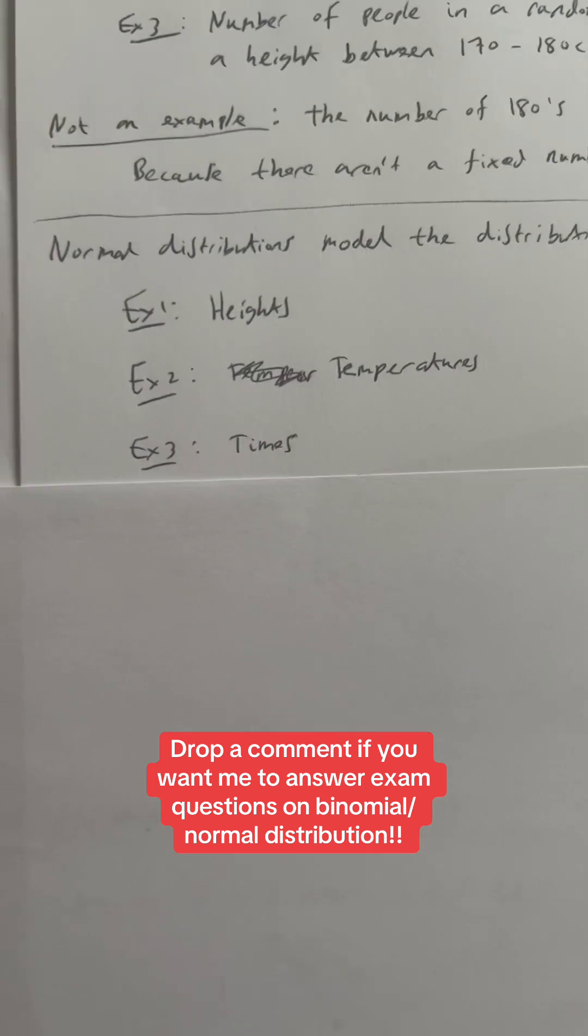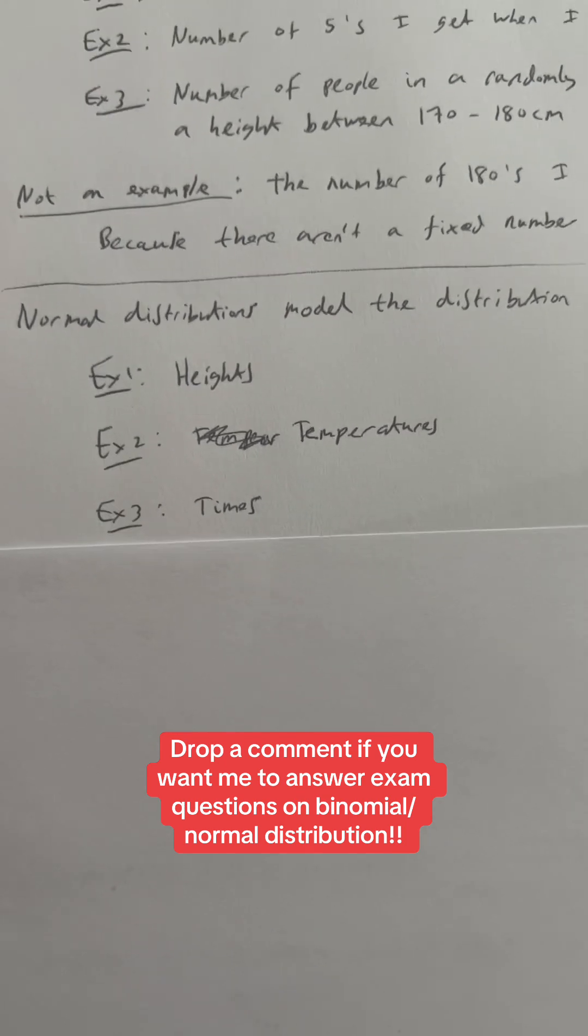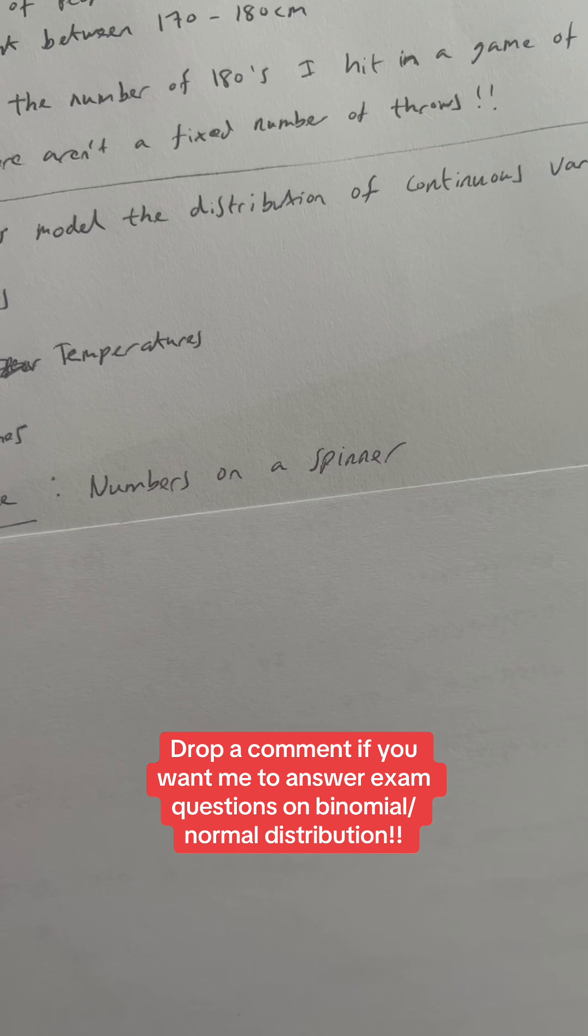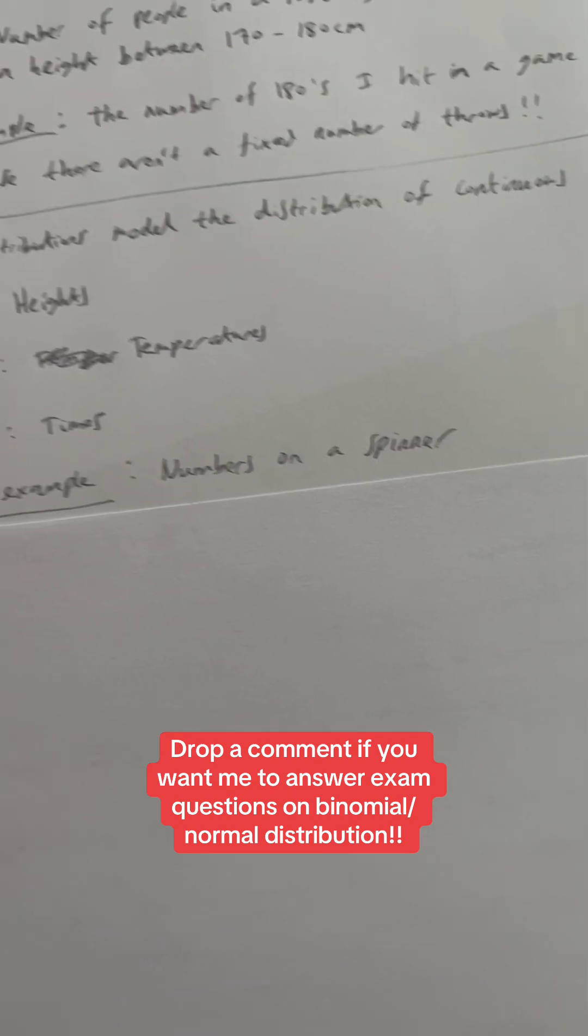But an example that would not be a normal distribution is the number that you get on a spinner, the numbers on a spinner. Spinners have numbers, discrete number of numbers, a set number of numbers. It's not continuous data.